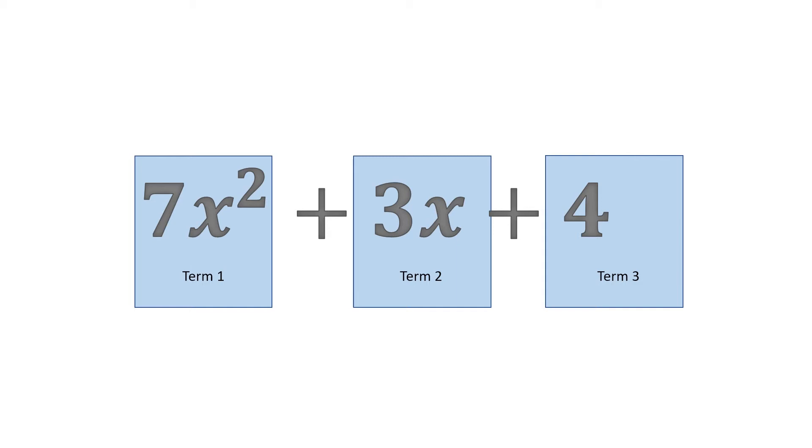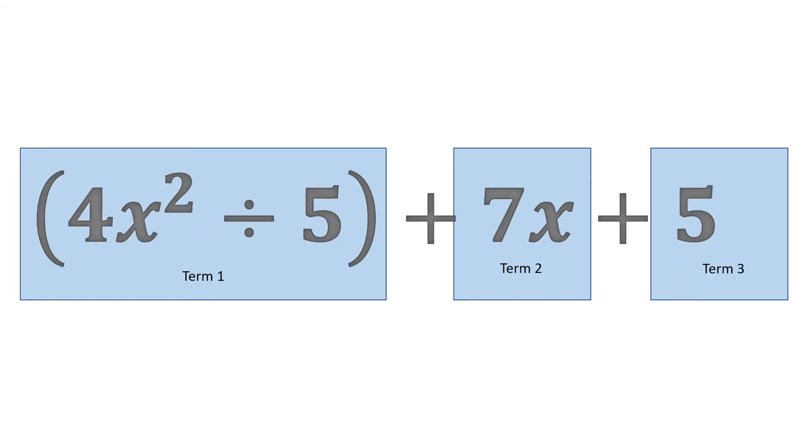But this is also a trinomial. In parentheses or in brackets, 4x squared divided by 5. This is our first term. 7x is our second term and 5 is our third term.